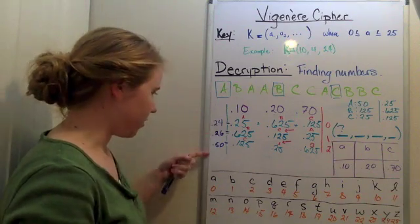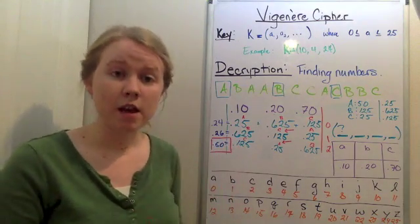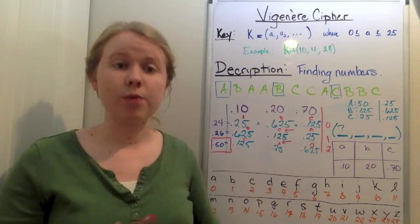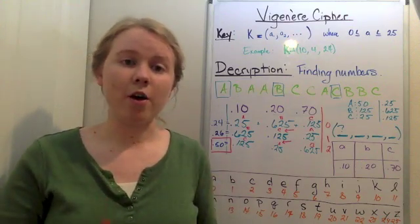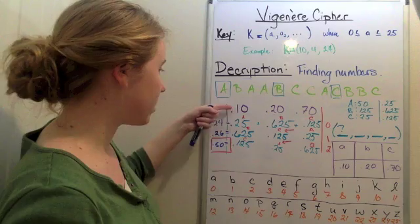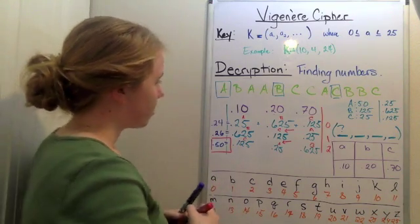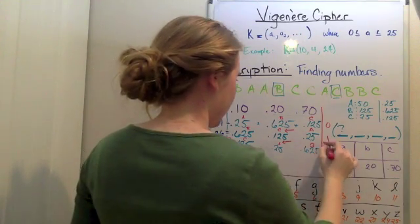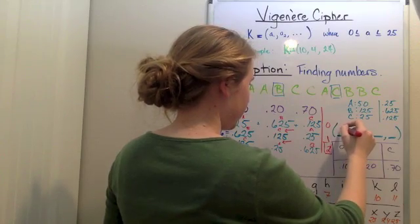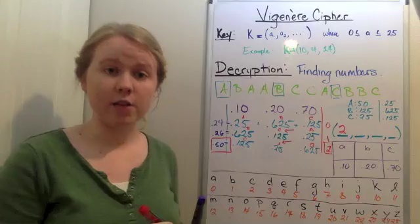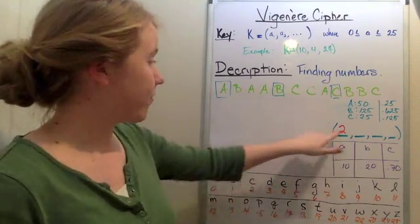So what we can see here from these numbers is that this number, remember that math principle I went over at the beginning, how you have to align them to get the largest possible value. So this number, where we got the largest possible value, is where they are aligned, where the true frequencies, these ones, are aligned with the correct frequencies for the shift. So we can see that that occurred with a shift of two. Therefore, this number in the first key here, or the first number in the key here, is two, because that's what kind of shift it took to get it correctly aligned.